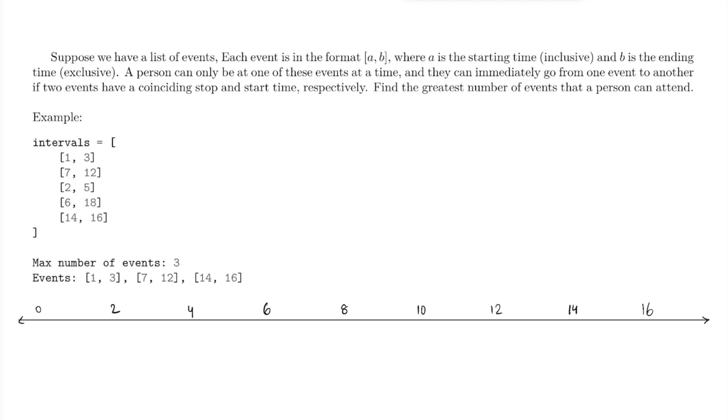The first option we have is to sort our list of intervals by first and then second value. Our list would then become (1,3), (2,5), (6,18), (7,12), and (14,16). Now we might say that we want to go from left to right in this list, and at any point, if the person isn't already in an event, we'll put them in an event.